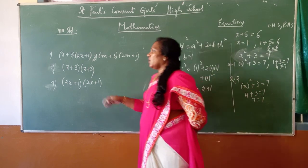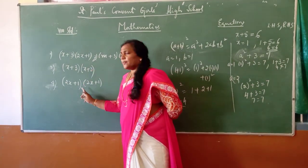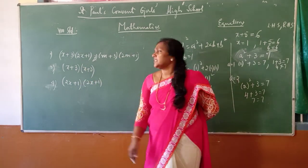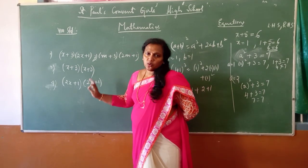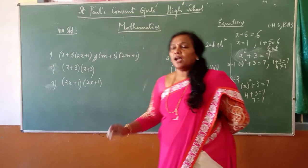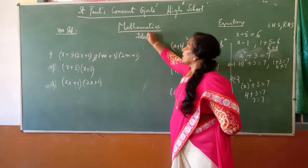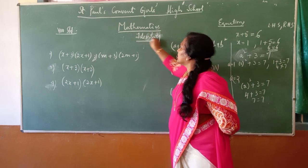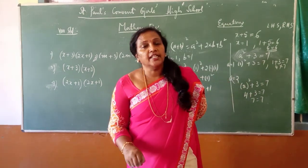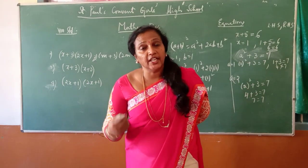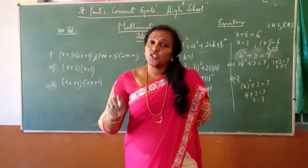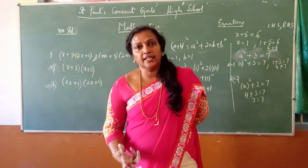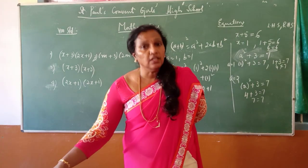These types of equations are called an identity. And the special products we saw earlier — you can find those products more easily using identities rather than by usual multiplying. You can make use of identities to find the product of those two. So today, let me teach you more about the identity. An identity is an equation or equality which is true for every value in it. There are four identities for you to learn.